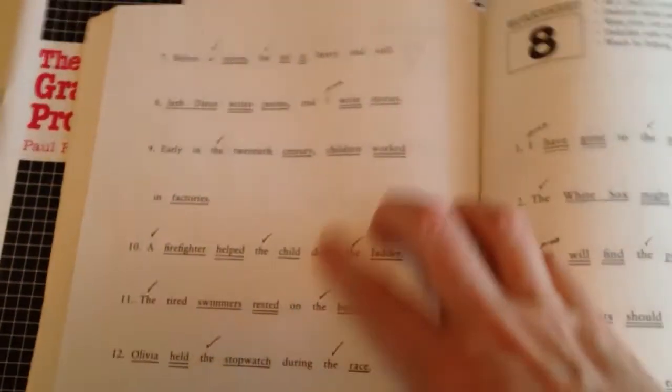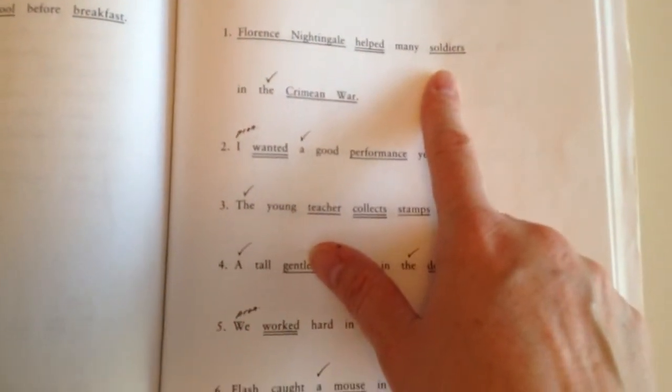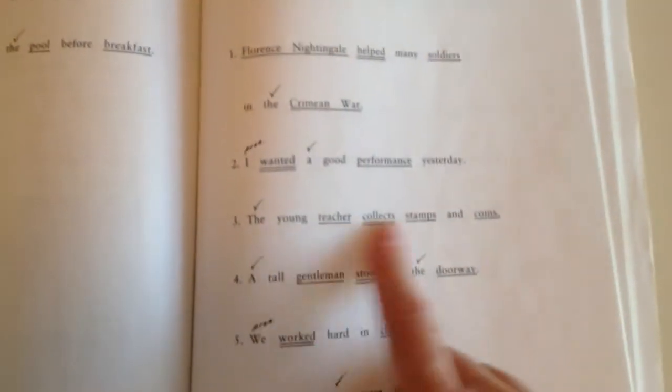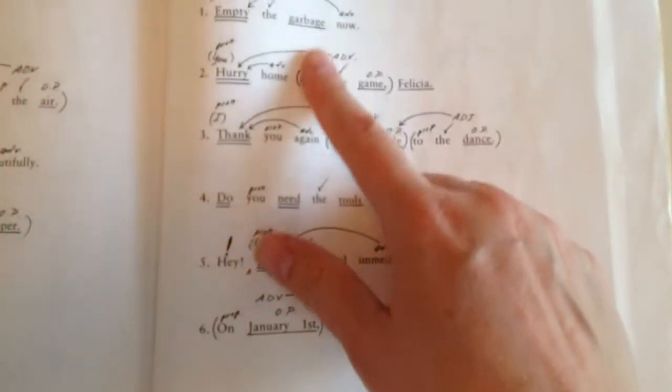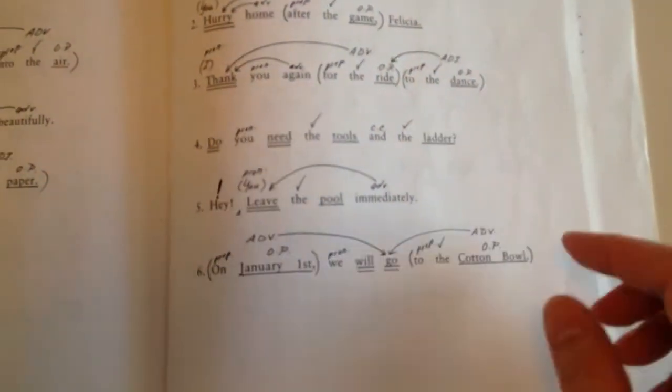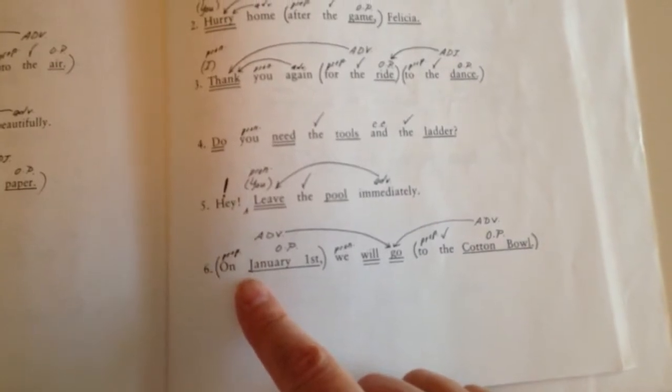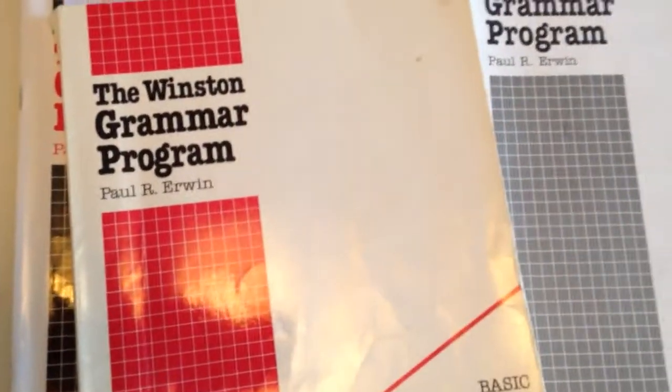And then in the teacher's guide, they also will have that actual worksheet, and then everything laid out for you. So at this point, there's not too much going on, but eventually it gets to where it looks like this. You have all this going on. What type of prepositional phrase is this? What is it modifying? And so on and so forth. So by the time they're done, they have a really good grasp of grammar.